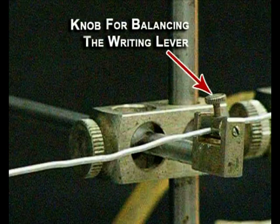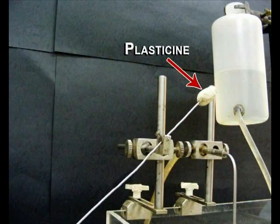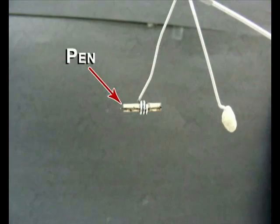The knob is used to balance the right hand lever with the help of plasticine. At the tip of the right hand lever is the pen.